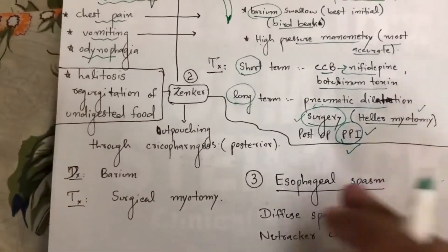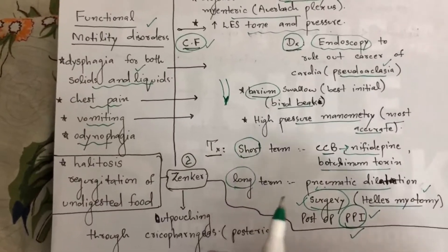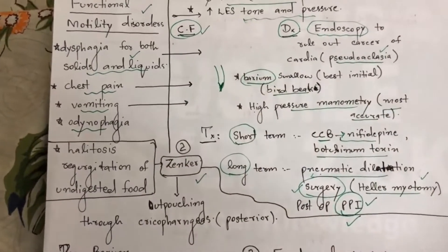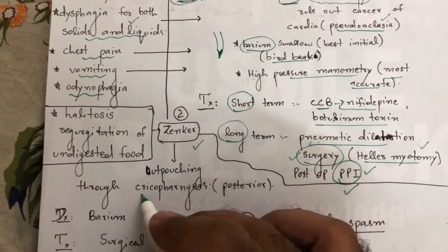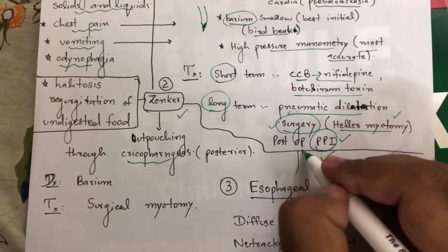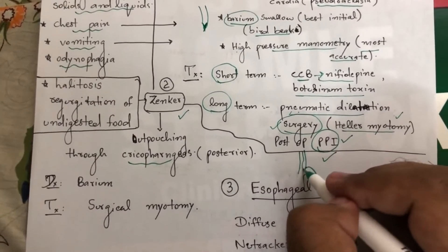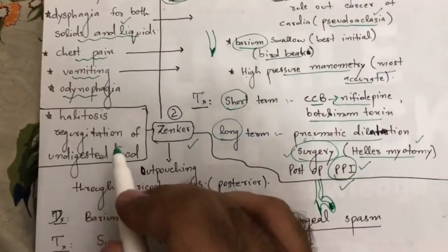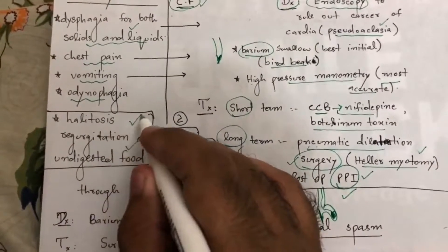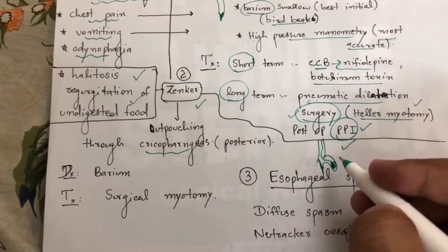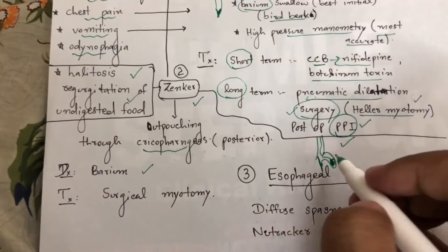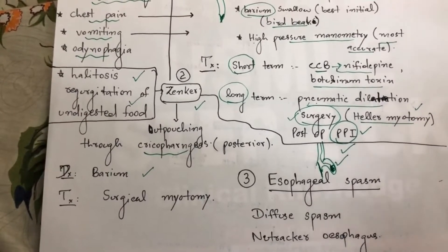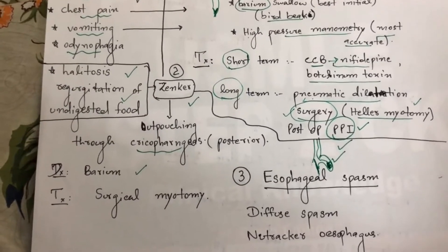The next motility disorder is Zenker's diverticulum, which is a mechanical disorder. In Zenker's, there is a posterior outpouching of the esophagus at the level of the cricopharyngeus muscle. Food accumulates in this pouch as undigested food — it never reaches the stomach. This causes halitosis (bad smell from the mouth). Diagnosis is by barium swallow, which shows the pouch. Treatment is surgical myotomy or diverticulectomy.